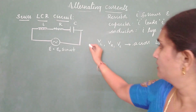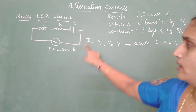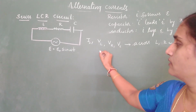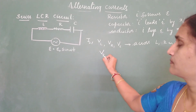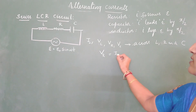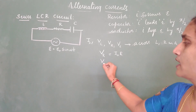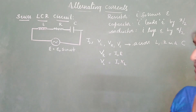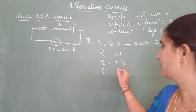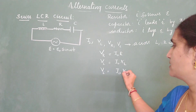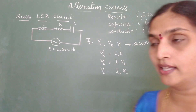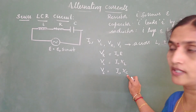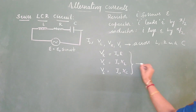I am going to show you the phasor representation for all four vectors. So let the current be I₀. For a resistor, voltage equals current times resistance. For an inductor, resistance offered is the inductive reactance X_L. And for a capacitor, it is I₀ times X_C. X_L is omega times L, whereas X_C is 1 by omega times C. These are called inductive reactance and capacitive reactance respectively. I will call this set of three equations as equation 1.